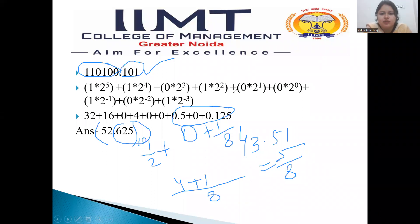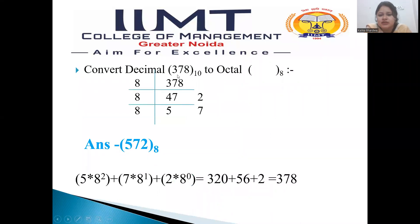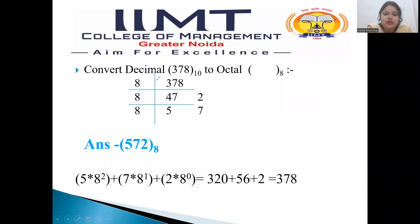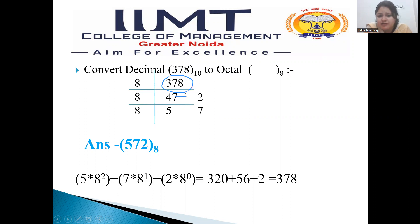Let's move forward towards the next conversion: decimal number to an octal number. The digit given is 378 and we have to convert it into an octal digit. In octal the base is 8, so we divide by 8. When 378 is divided by 8, it goes up to 47 times and the remainder will be 2.